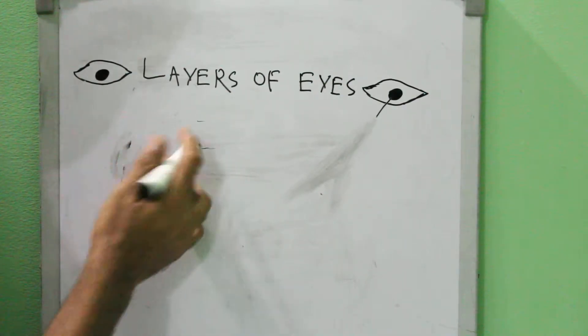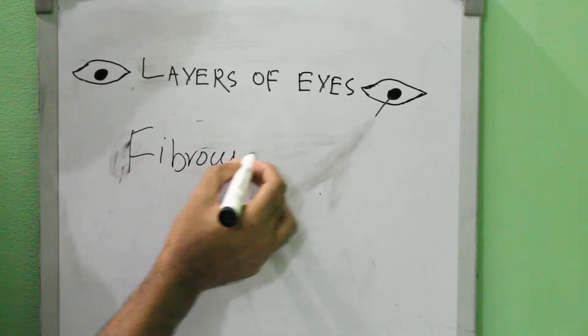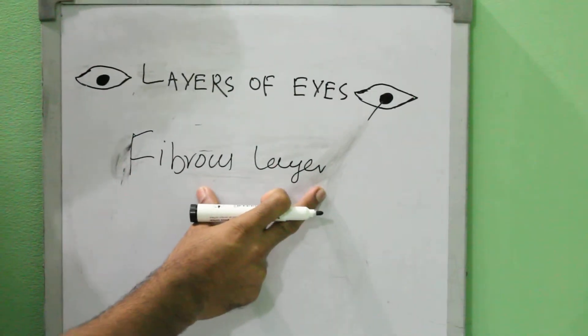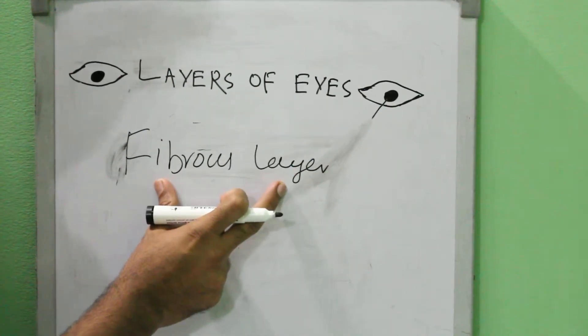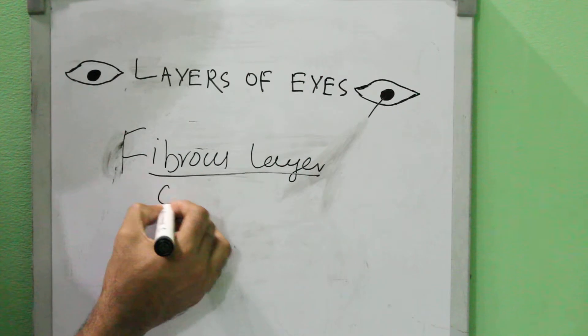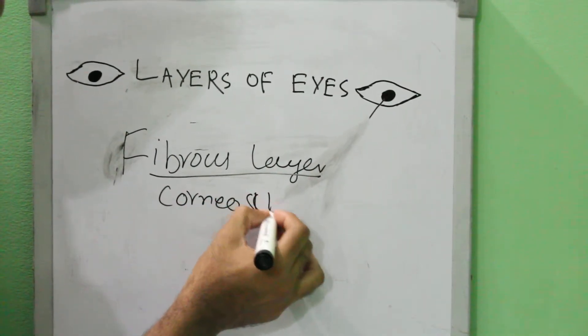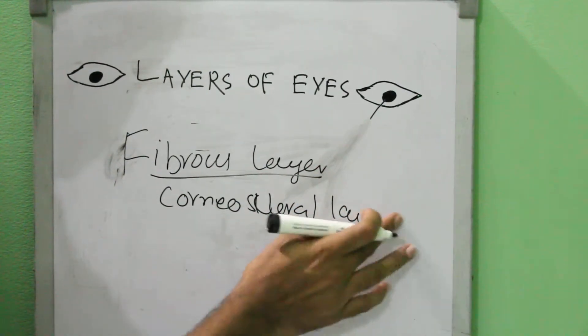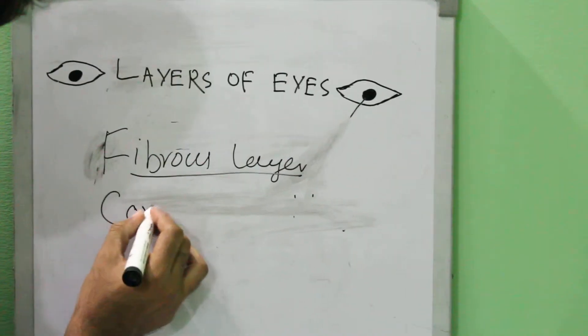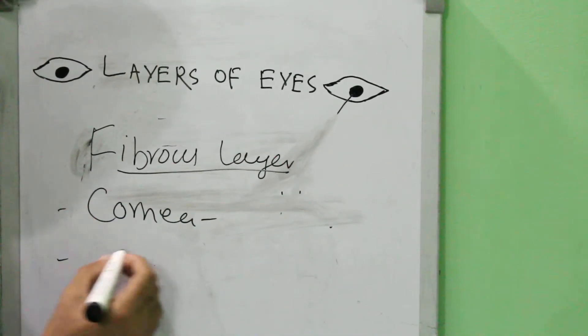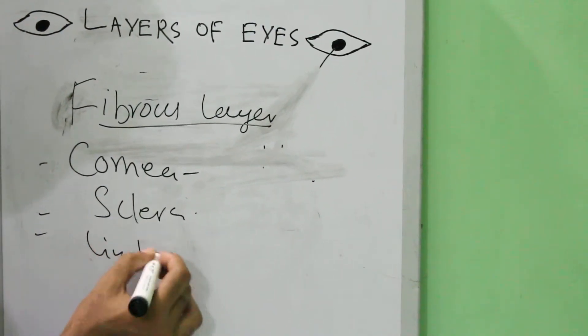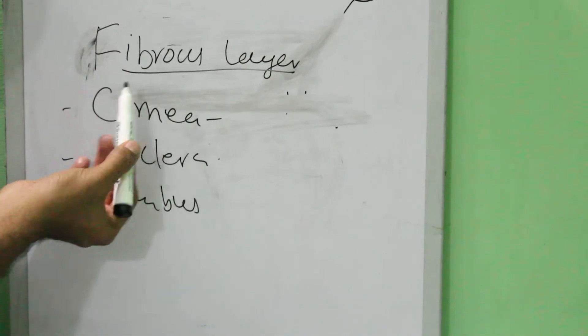The fibrous layer. This fibrous layer is also called the cornea-scleral layer because it has two important parts. It has cornea, it has sclera, and there's one other part which is limbus. Cornea, sclera, and limbus are present in the fibrous layer.